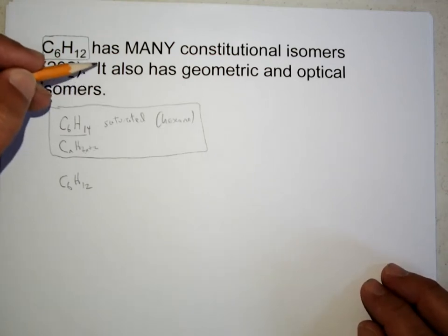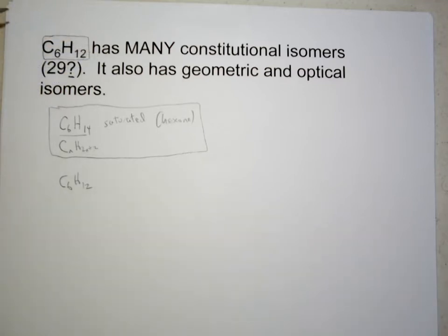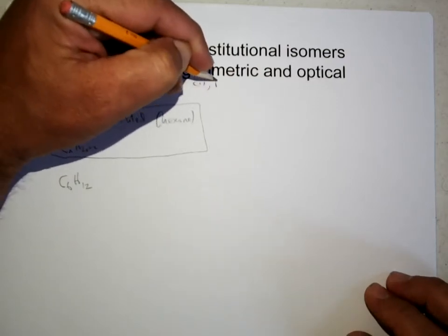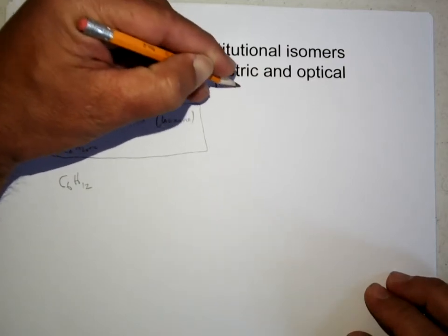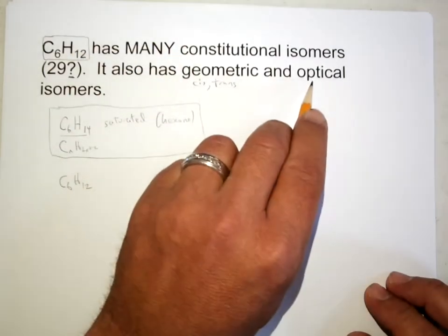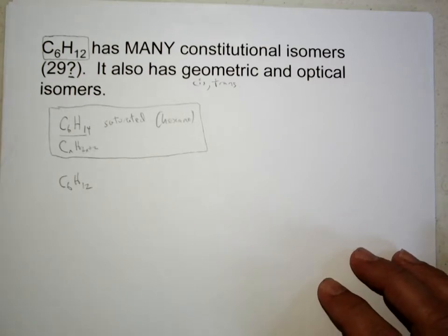The constitutional isomers can often have different geometric isomers as we've talked about before, cis versus trans. And then optical isomers we'll talk about later, but some of these are going to have chiral carbons and thus have optical isomers, a little preview of what we're going to talk about next.